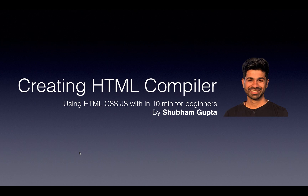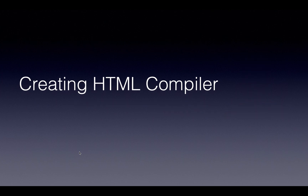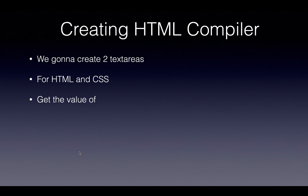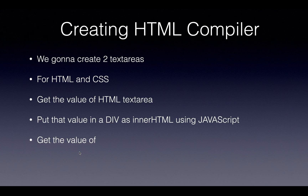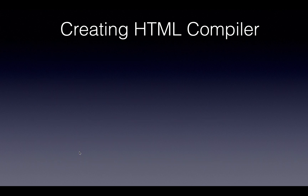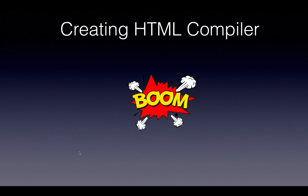Unlike last time where we jumped straight into coding, this time we'll think through how to build the application first. We're going to create two textareas — one for HTML and one for CSS. Get the value of the HTML textarea and put that value into a div as innerHTML using JavaScript. Then get the value from the CSS textarea and put that into a style tag as innerHTML using JavaScript. That's all!